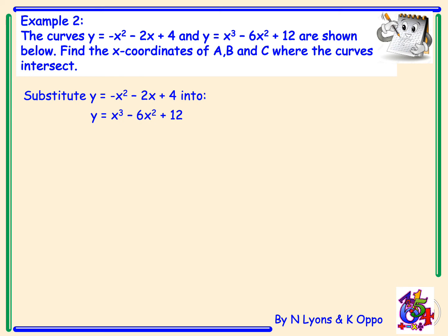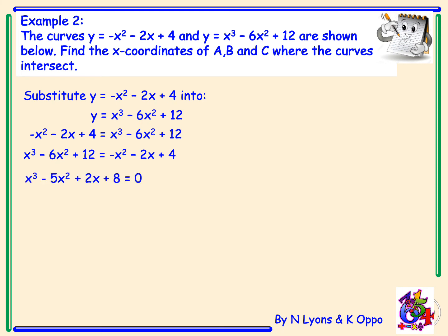We replace y on the left-hand side with negative x-squared minus 2x plus 4 and make it equal to x-cubed minus 6x-squared plus 12. Before getting everything to one side, I'm going to flip everything around to have the positive x-cubed on the left. So on the left: x-cubed minus 6x-squared plus 12, and on the right: negative x-squared minus 2x plus 4. Rearranging: negative x-squared moves over and adds to negative 6x-squared giving negative 5x-squared; minus 2x comes over as plus 2x; plus 4 comes over and is taken from 12 giving positive 8. So we now have x-cubed minus 5x-squared plus 2x plus 8 equals zero.